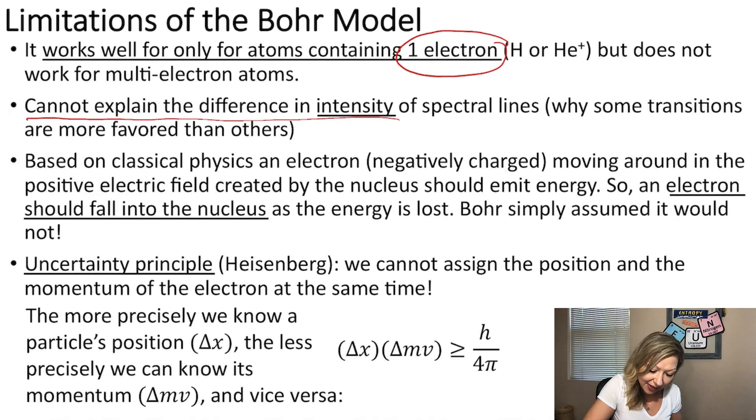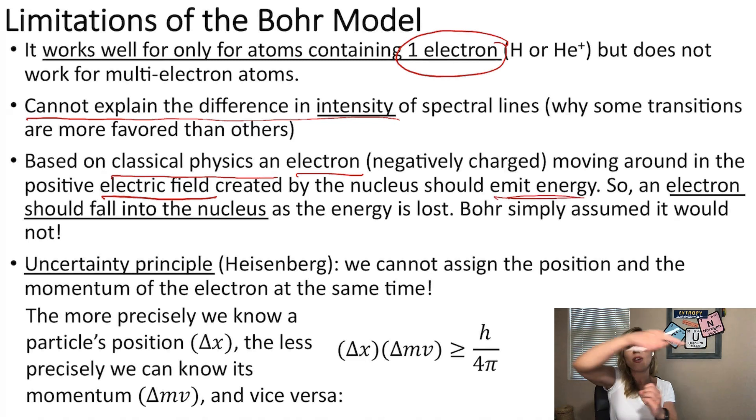Moreover, based on classical physics, if you have a negatively charged particle, just like an electron moving around in a positive electric field, and in this case, it can be created by a nucleus, the electron, the negatively charged particle, should emit energy. So as it moves around the nucleus, at some point it should fall into the nucleus.